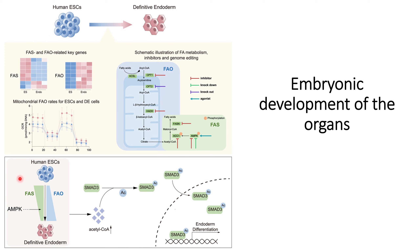One more thing the researchers developed is a de novo condition in which if fatty acid synthesis is reduced and fatty acid oxidation is increased, they can form a definitive endoderm layer. In this condition, acetyl-CoA converts SMAD3 into acetylated SMAD3. This SMAD3 acetylation helps in the relocation of acetylated SMAD3 into the nucleus, where it triggers epigenetic changes and activates genes responsible for endoderm differentiation.